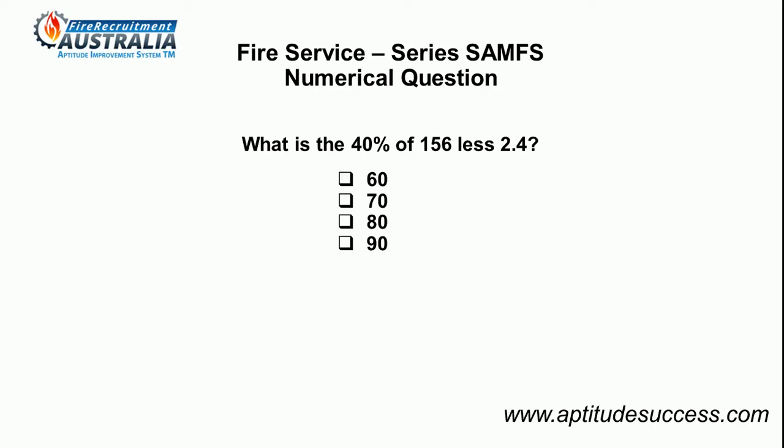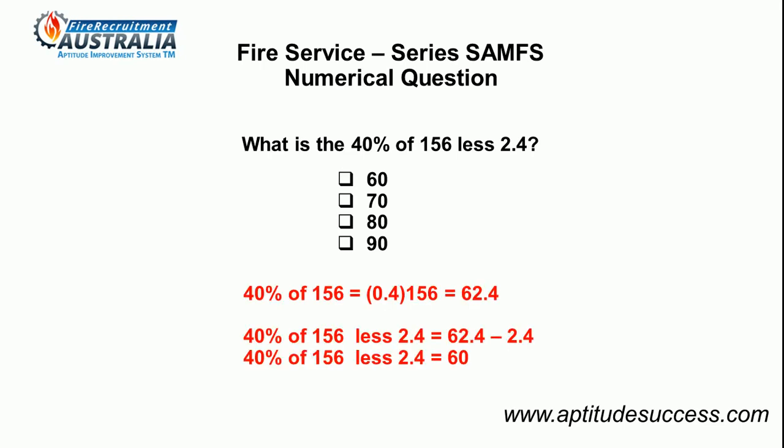We first calculate 40% of 156. This will give us 62.4. Now, 62.4 minus 2.4 will give us 60. Hence, the answer is 60.